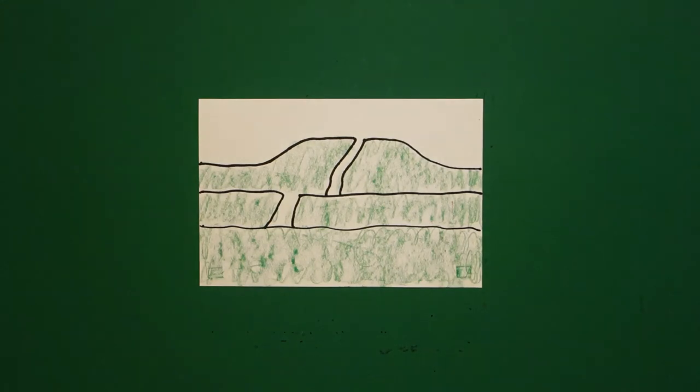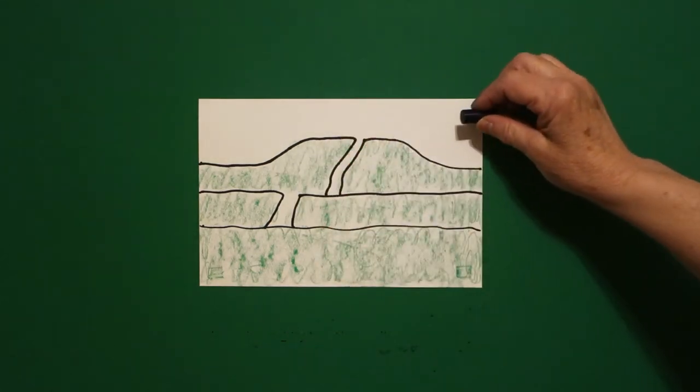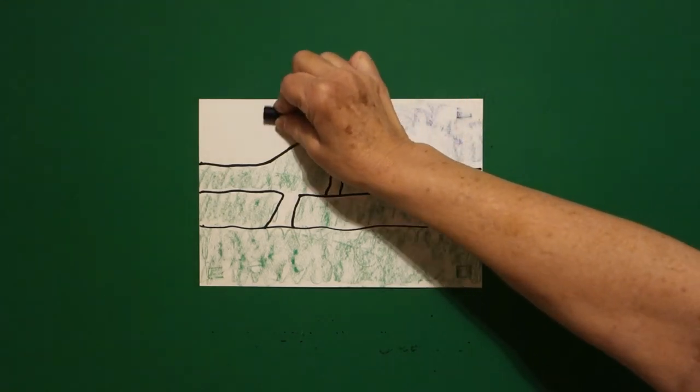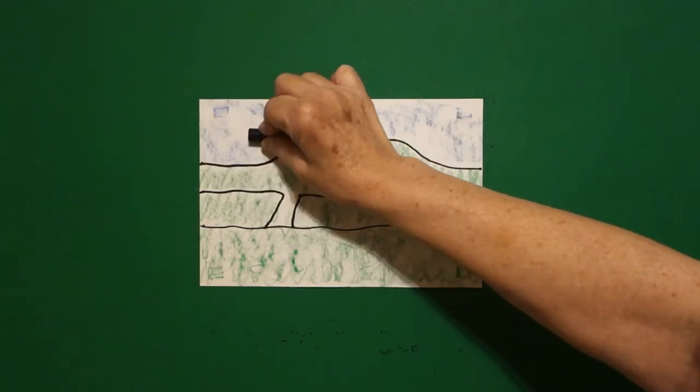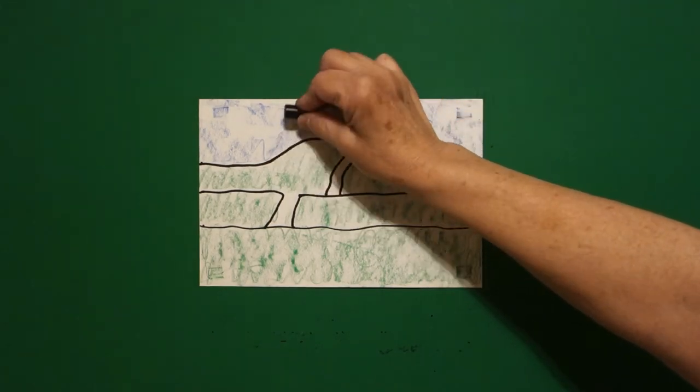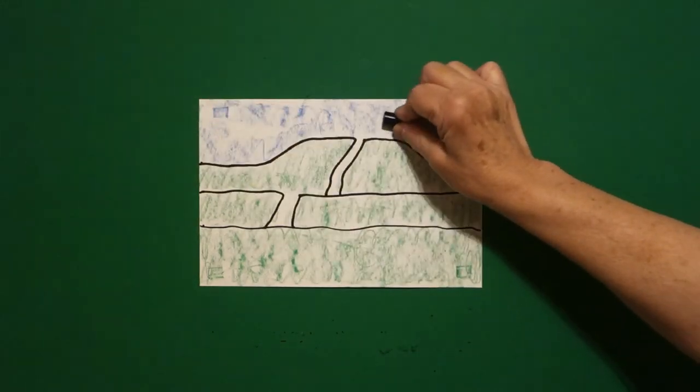Then, take your blue, if you have a fat blue, and we're just going to color in the top. And that also is going to be kind of disappearing. You kind of want to leave it a little bit open for clouds.